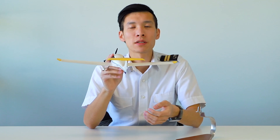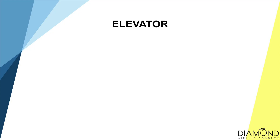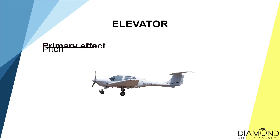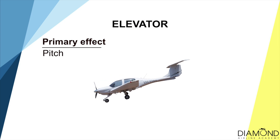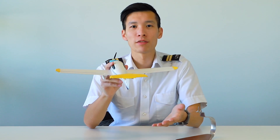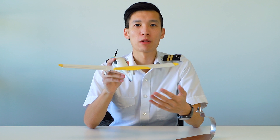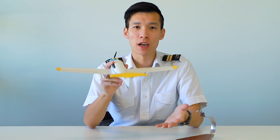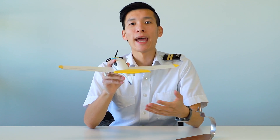The second one is the lateral axis, controlled by the elevator. As we know, the primary effect of the elevator is pitch. However, for the elevator there is no aerodynamic secondary effect.